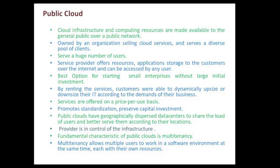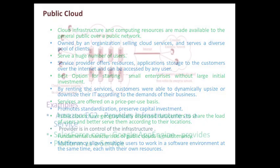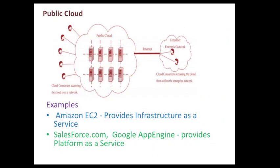The provider is in control of the infrastructure. A fundamental characteristic of public cloud is multi-tenancy. Multi-tenancy allows multiple users to work in a software environment at the same time, each with their own resources. Examples include Amazon EC2, which provides IaaS, and Salesforce.com and Google App Engine, which provide PaaS.